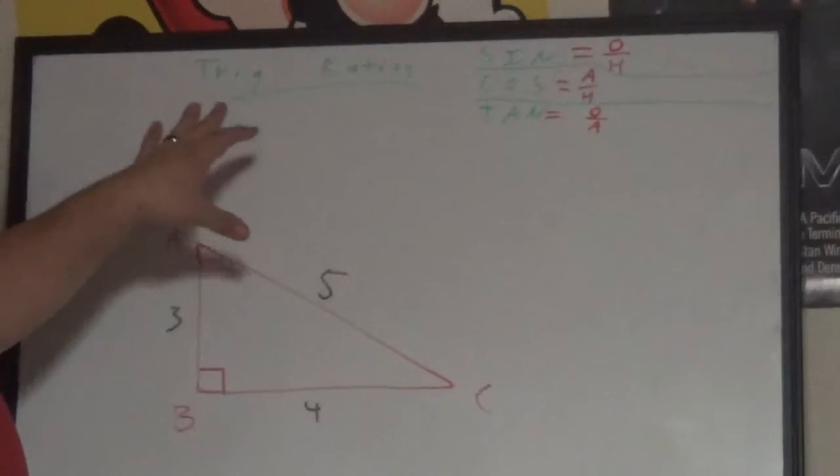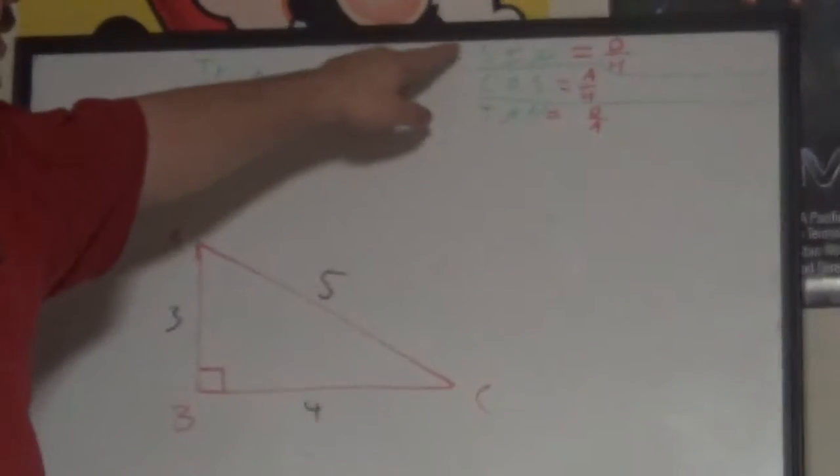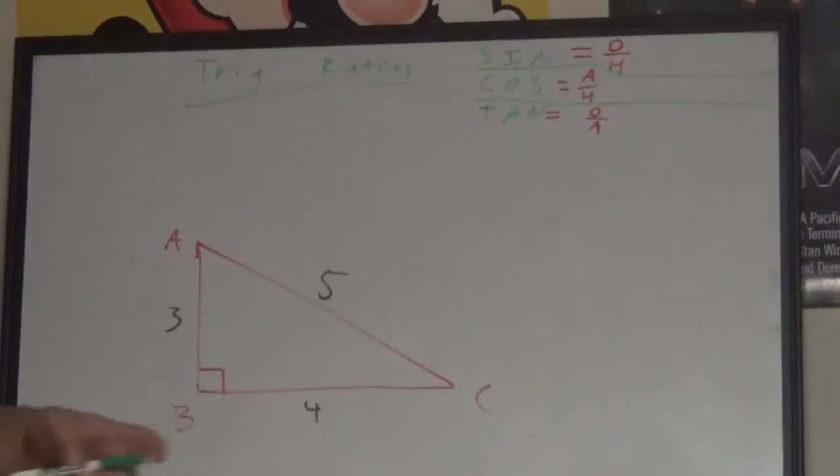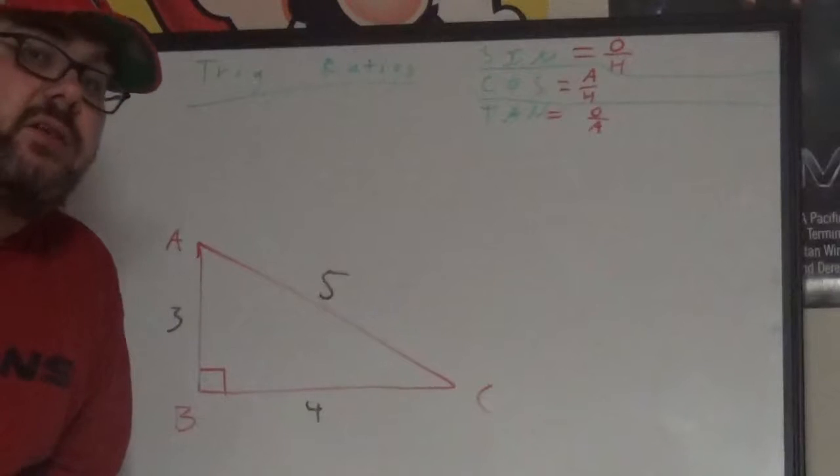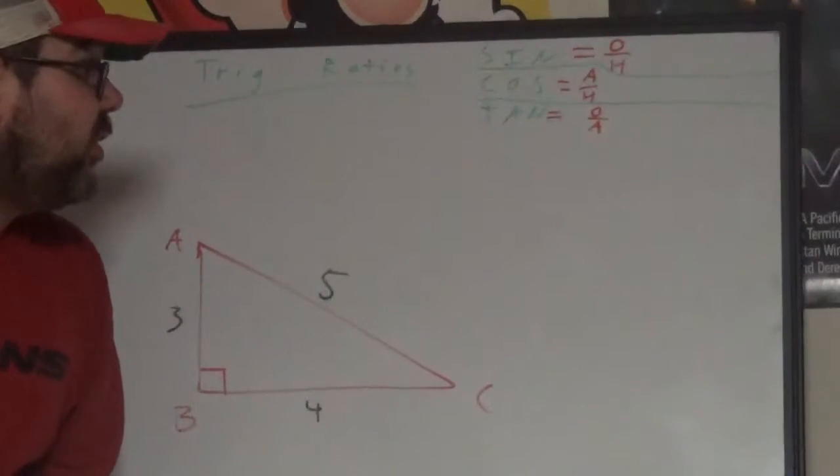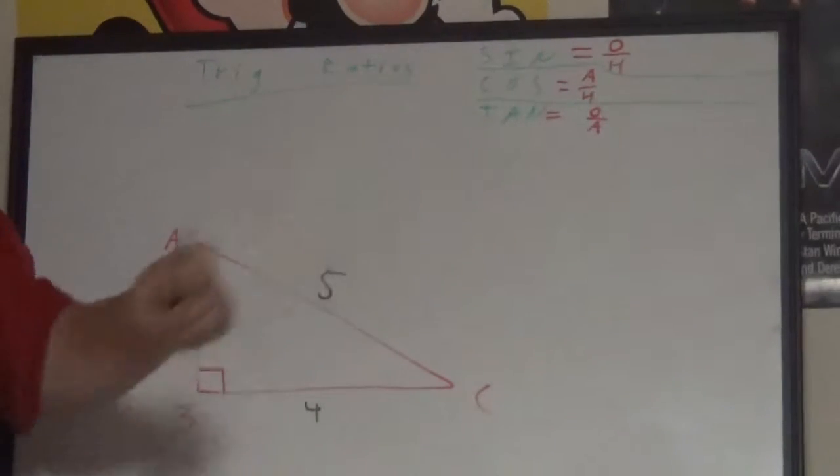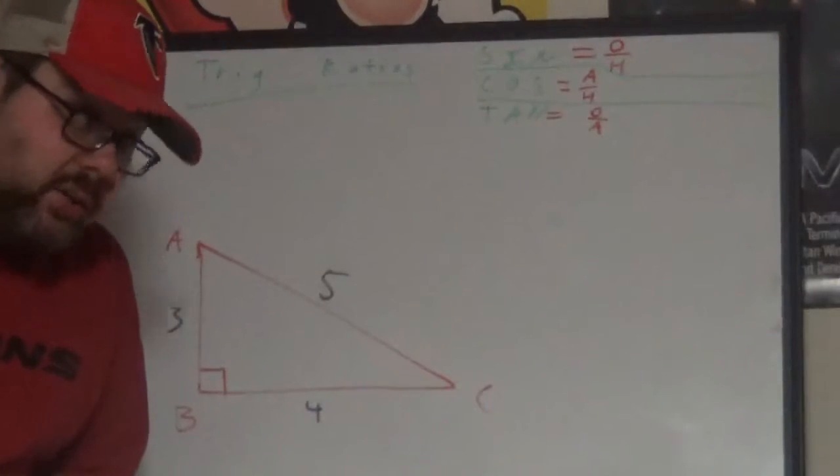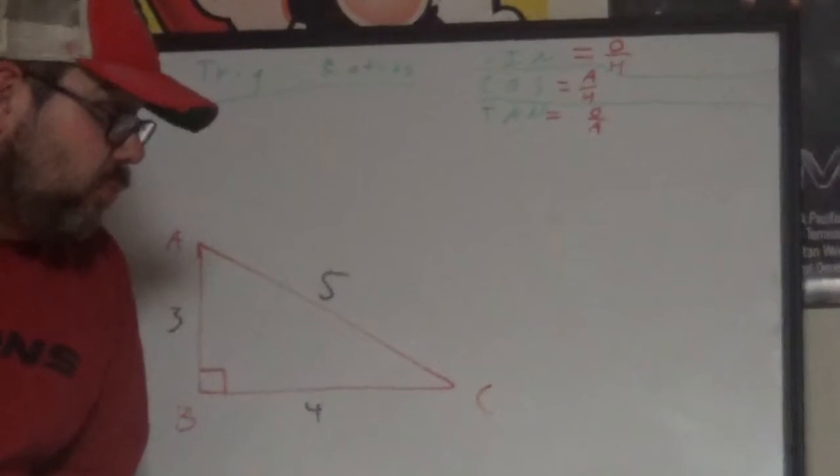This looks complicated - seeing sine equals O over H, cosine equals A over H, and tangent equals O over A. That might look complicated, it's not.